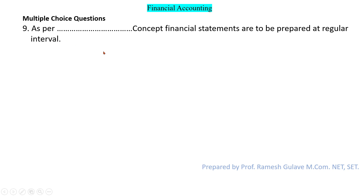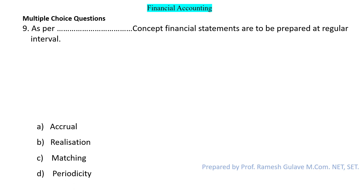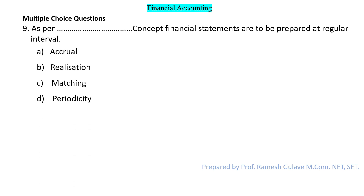The next question says: as per dash concept, financial statements are to be prepared at regular intervals. As per the periodicity concept, financial statements — including the profit and loss account and balance sheet — are to be prepared at regular intervals by a business organization. So for question number nine, option B is the right answer.